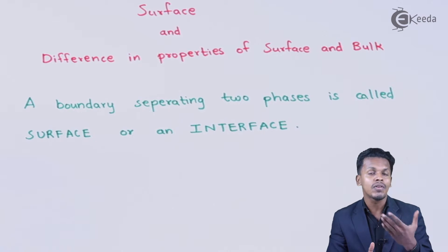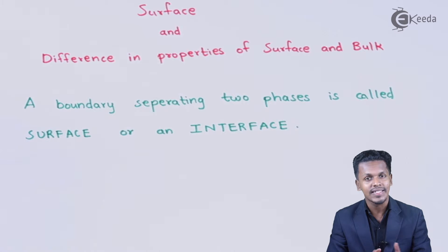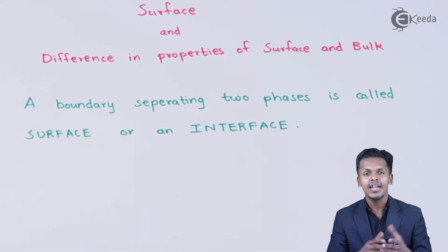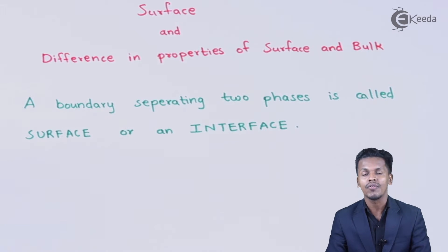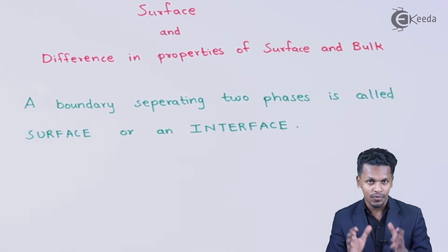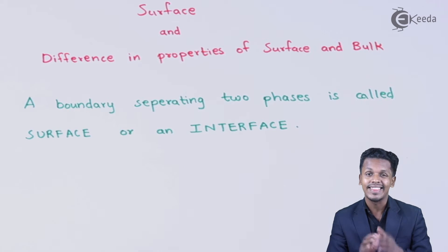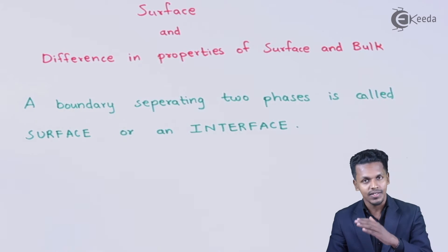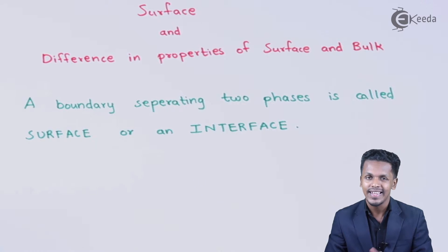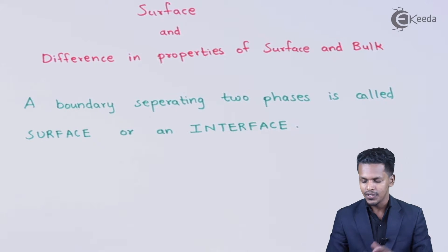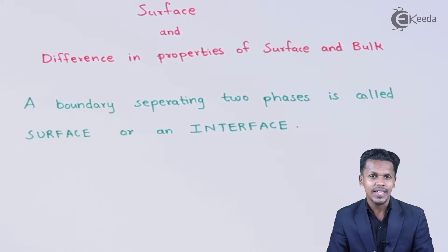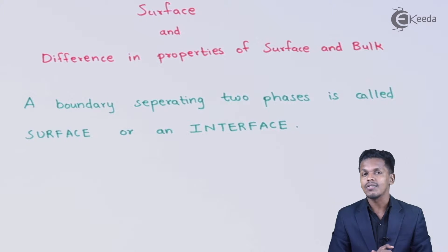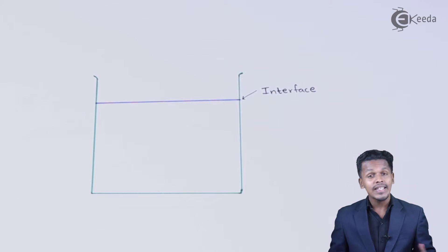This concept is not only applicable to liquid and gas but also to solid and gas. Every solid is basically surrounded by gaseous molecules, so we can say that the surface of a solid separates the solid phase from the gaseous phase.